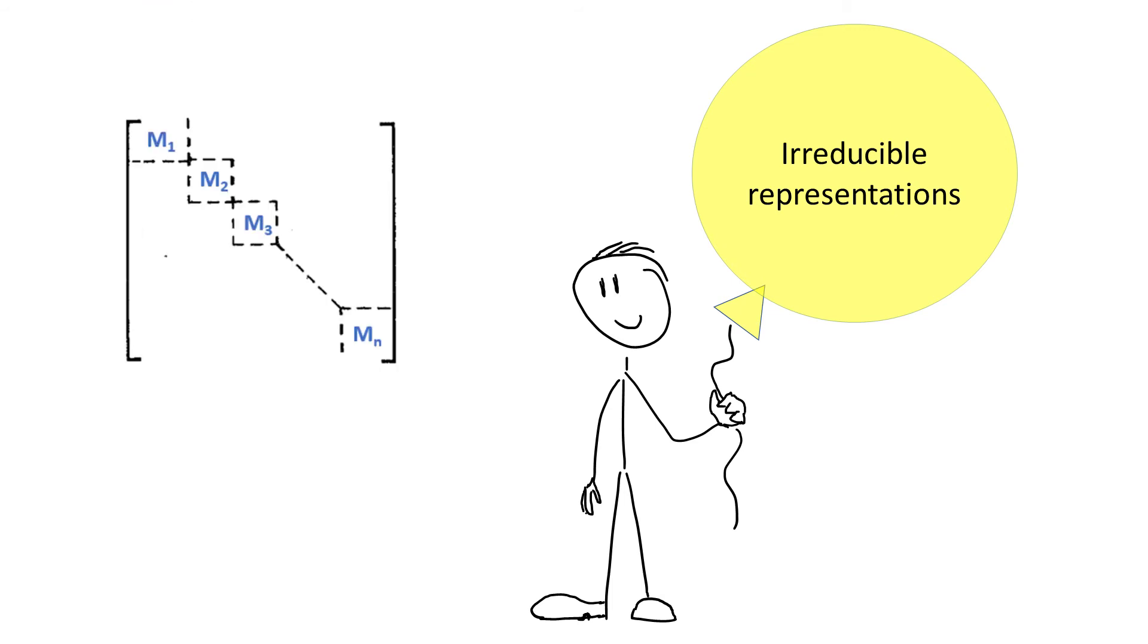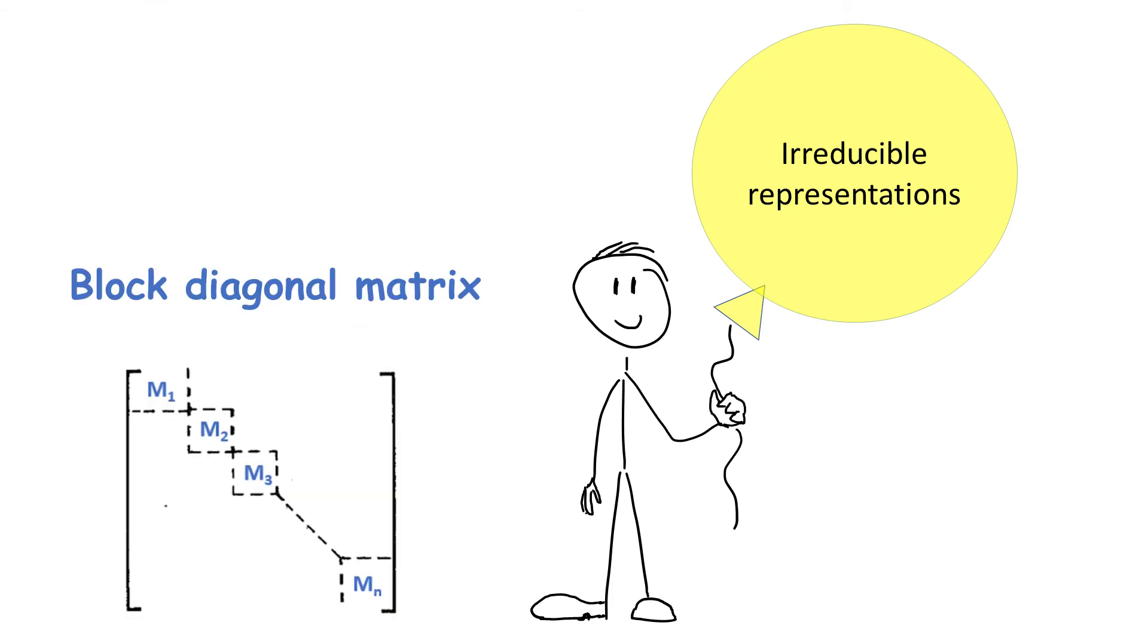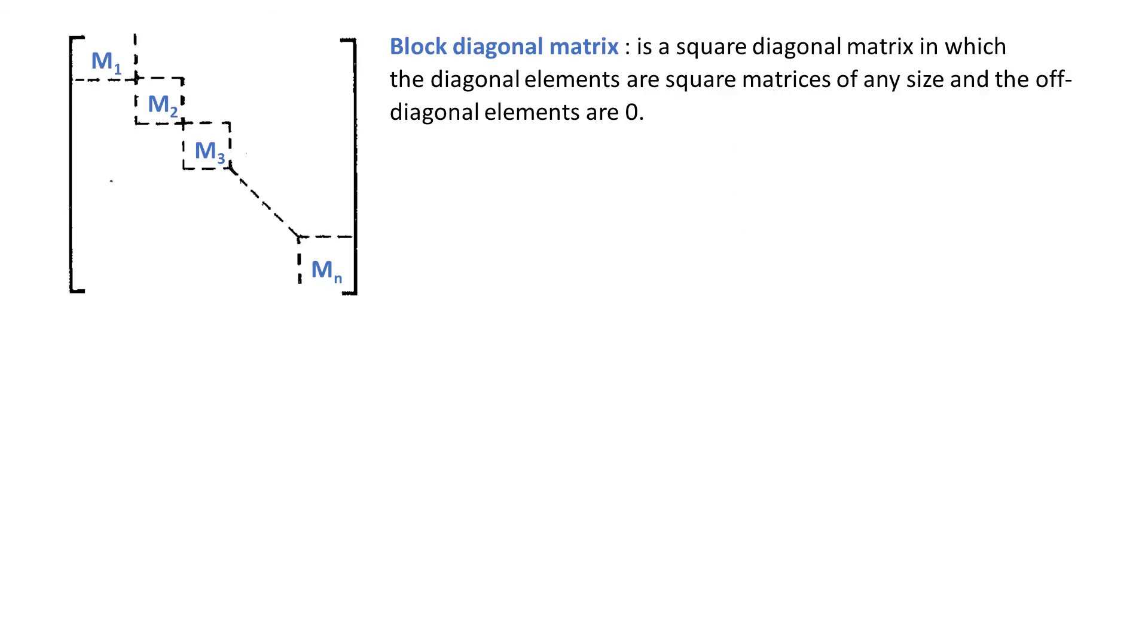Now I would like to expand on the topic of irreducible representations. But before I can do that, I need to introduce you to block-diagonal matrix. Block-diagonal matrix is a square diagonal matrix in which the diagonal elements are square matrices of any size and the off-diagonal elements are zeros. So here we see a block-diagonal matrix made of 2x2 and 1x1 blocks. And here's another made of three 1x1 blocks.